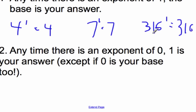And then anytime there's an exponent of 0, 1 is your answer, except if 0 is your base. In that case, it would be 0. If we have 6 to the 0 power, your answer is going to be 1.